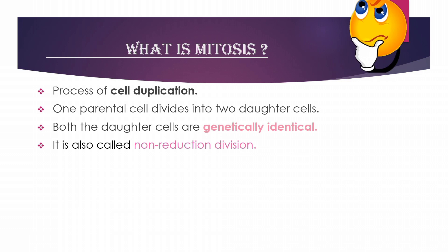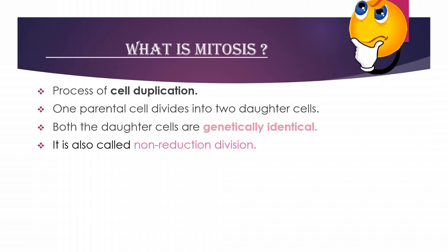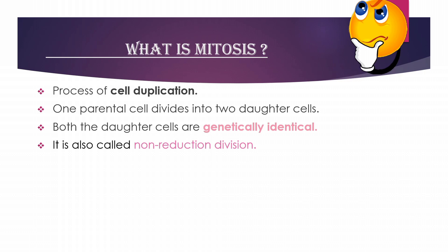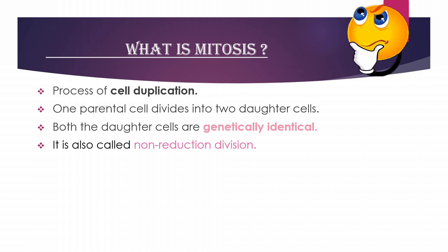What is mitosis? Mitosis is the process of cell duplication. Cell duplication means that if one cell divides, the resulting cells will double in number. If one cell divides, the resulting daughter cells are two. If you divide two, the resulting daughter cells are four. If you divide four, then eight. If you divide eight, then sixteen daughter cells. If you divide sixteen, then thirty-two, and so on.